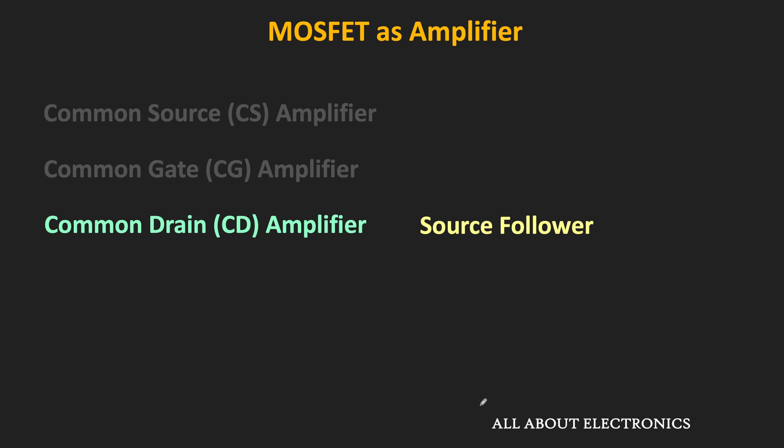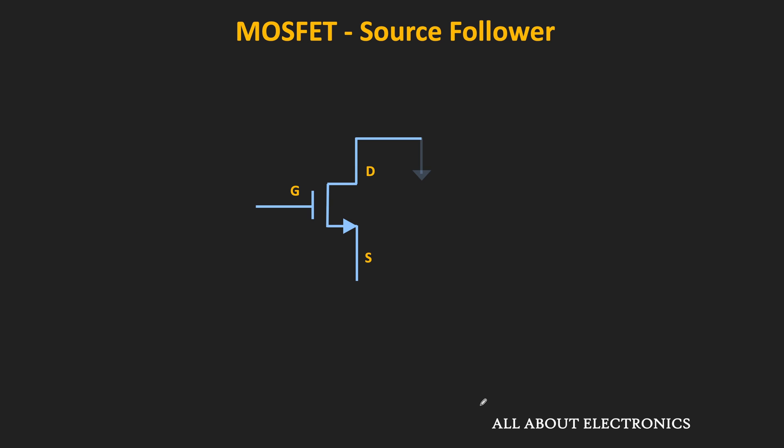In this source follower, the drain terminal is at AC ground. The input signal is applied between the gate and the ground, while the output is measured between the source and the ground terminal. Since the drain terminal is at AC ground, the input is applied between the gate and the drain terminal, while the output is measured between the source and the drain terminal. That means the drain terminal is common between the input and the output side, and hence it is known as the common drain amplifier configuration.